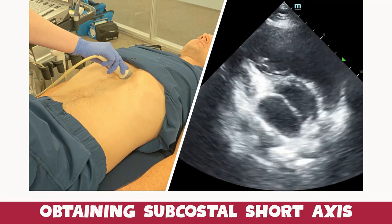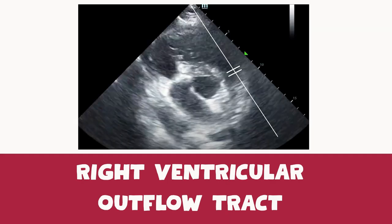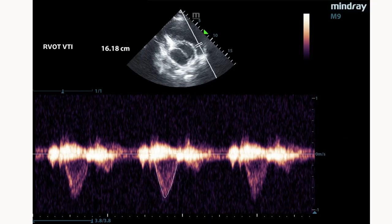We're going at the level of the aortic valve. We have our left atrium, right atrium, right ventricle, and pulmonary artery, with the aortic valve in the center. We place the pulse wave Doppler at the right ventricular outflow tract and the machine gives you the number. We trace the area under the curve — or it might do it automatically depending on your machine. In this patient, the RVOT VTI is 16 centimeters, which is within normal range.